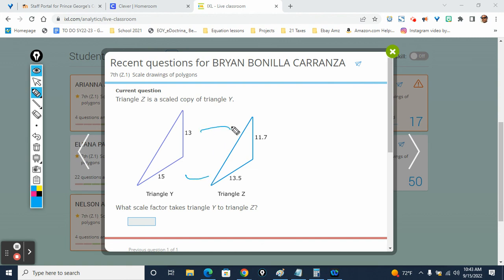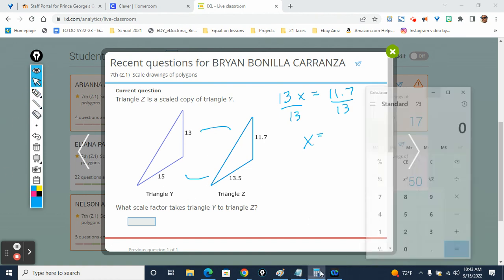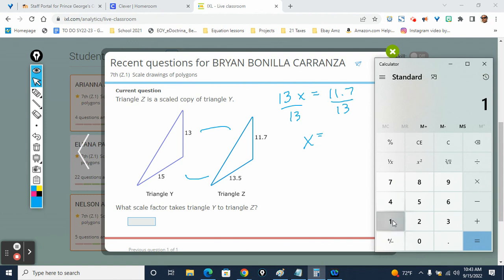All right. Are we going with the 15 or the 13 Bryan? 13. So we're going to do 13x equals 11.7. Divide both sides by 13. Get a calculator tell me what that is. 0.9. That's your answer.